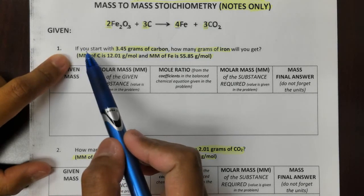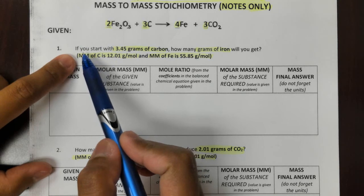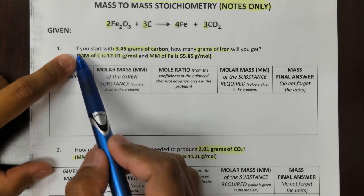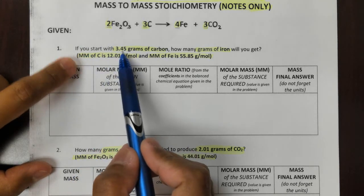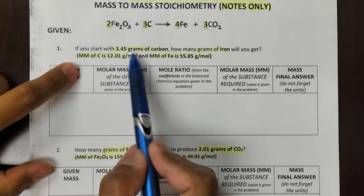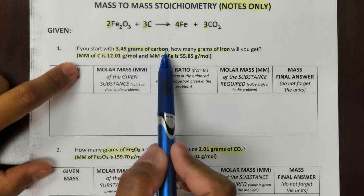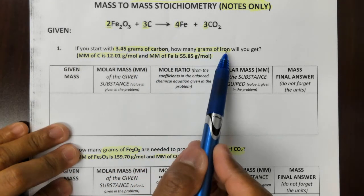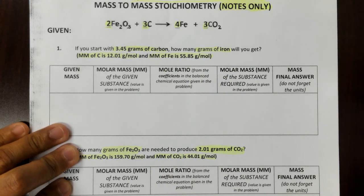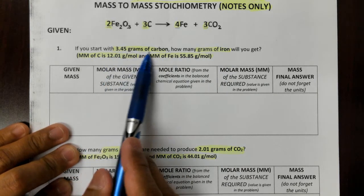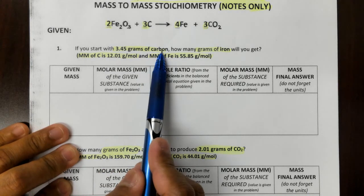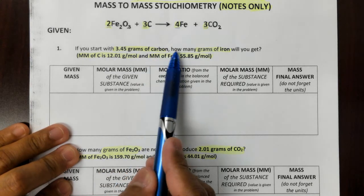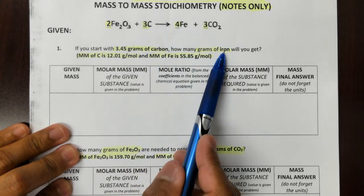The first problem we're going to do is this one: if you start with 3.45 grams of carbon, how many grams of iron will you get? I highlighted the 3.45 grams of carbon, which is our given, and we are solving for the grams of iron.